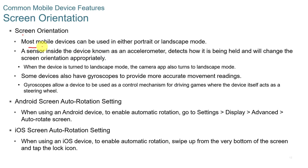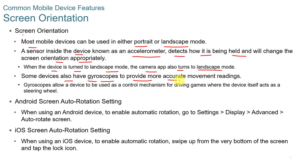Most mobile devices can be used in either portrait or landscape mode. A sensor inside the device known as an accelerometer detects how the device is being held and changes the screen orientation appropriately. Some devices also have gyroscopes to provide more accurate movement readings, which allow a device to be used as a control mechanism for driving games where the device itself acts as a steering wheel.